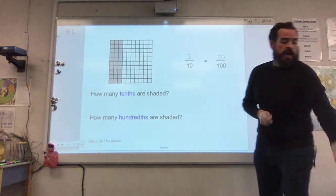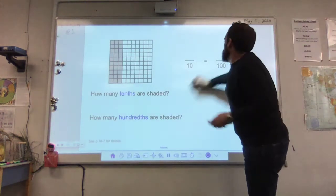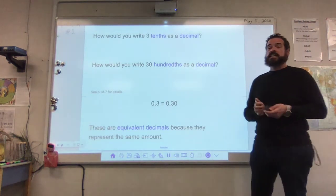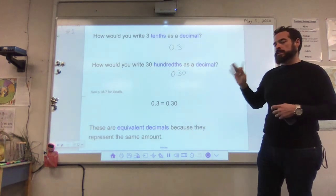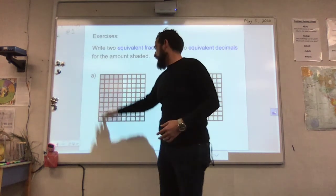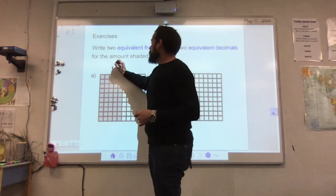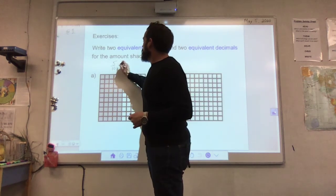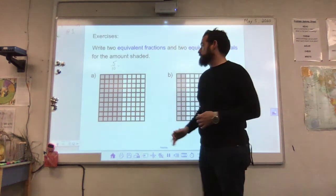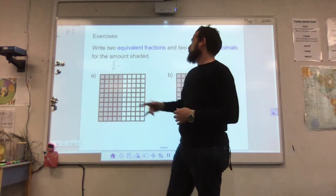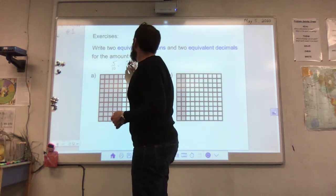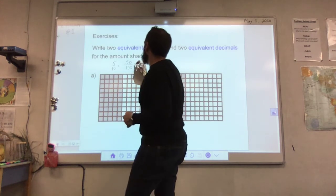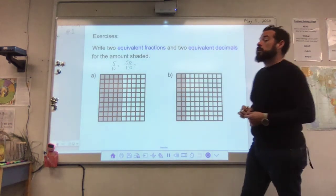Let's get started on our first slide. We've got a block broken down into hundredths. The first question to ask is how many tenths are shaded. We've done this before with base ten blocks. This is broken into a hundred equal pieces. If you look at each column, there are ten squares in each, so each fully shaded column represents one tenth. So counting the full columns shaded tells us how many tenths there are. I count one, two, three — so there are three tenths.